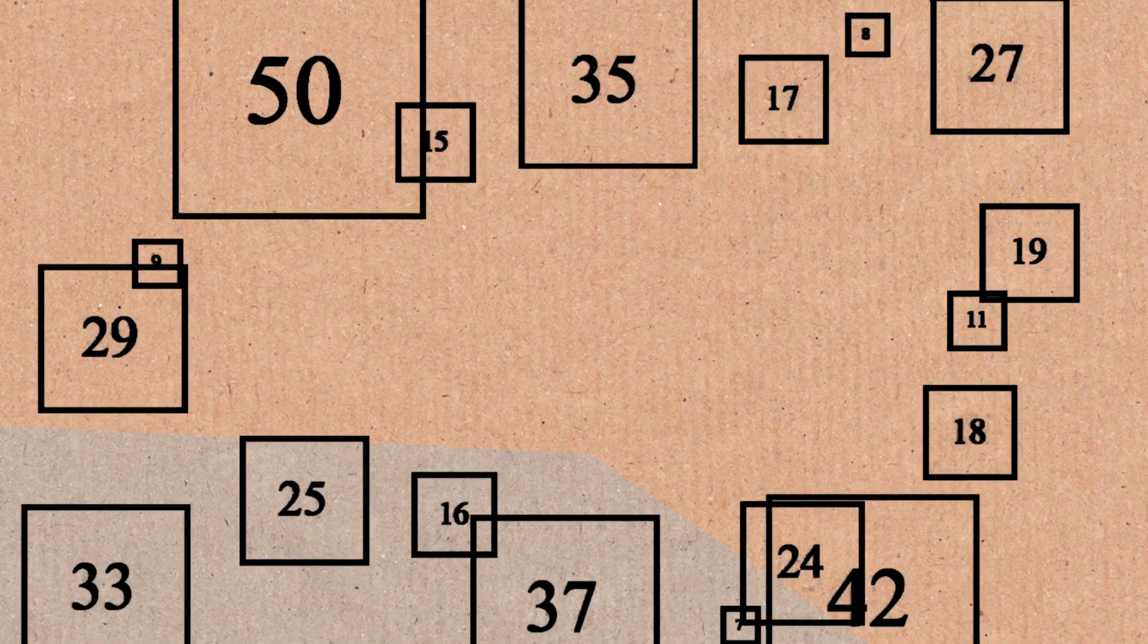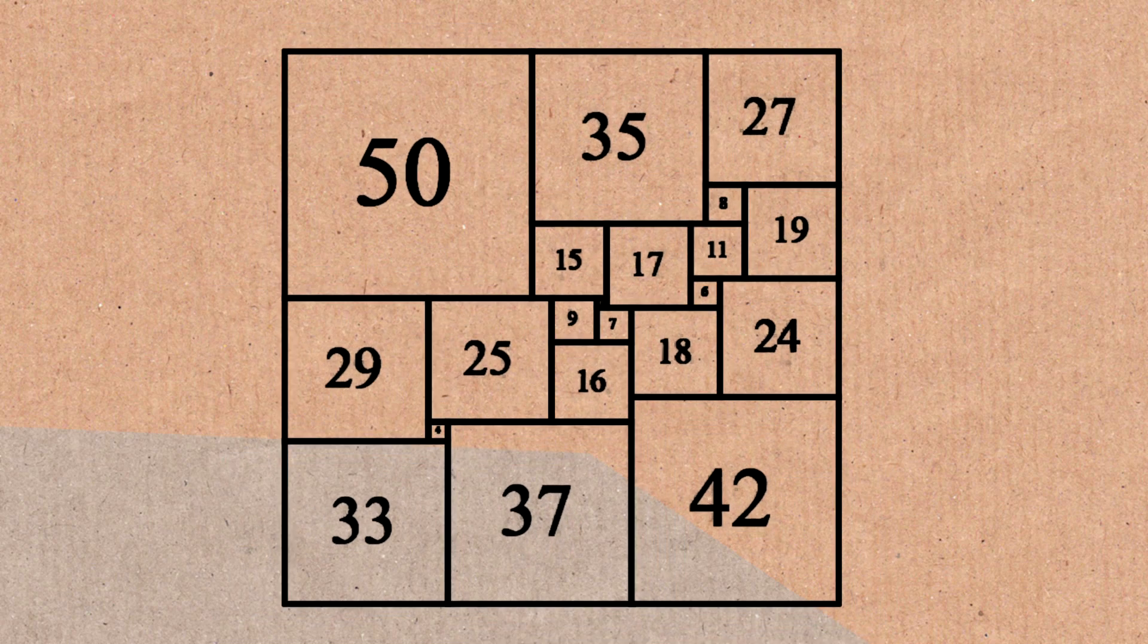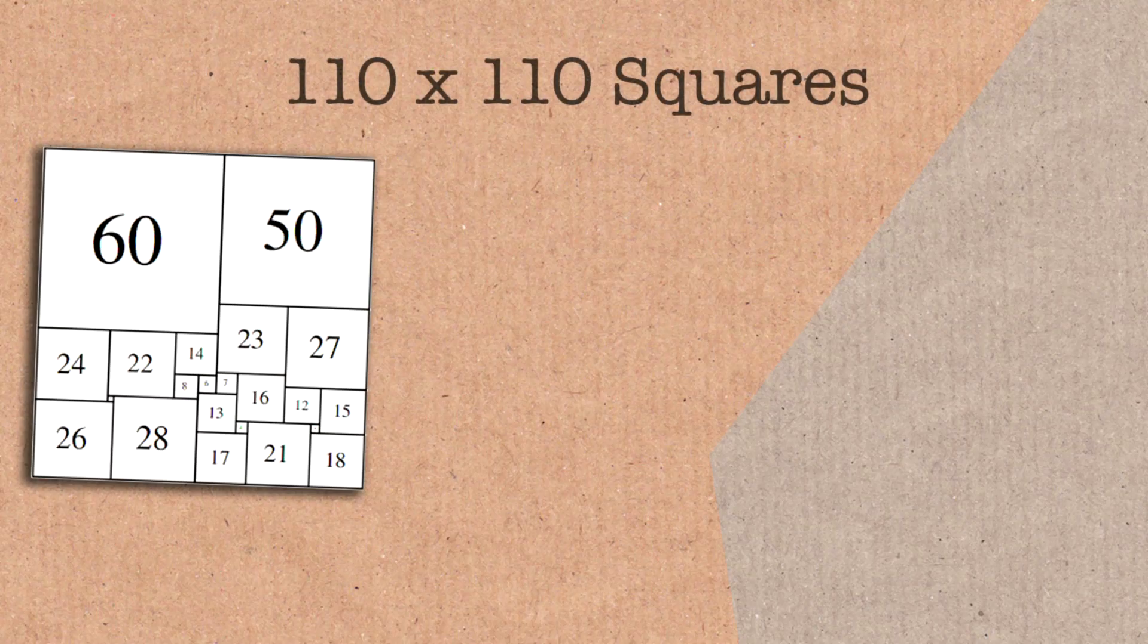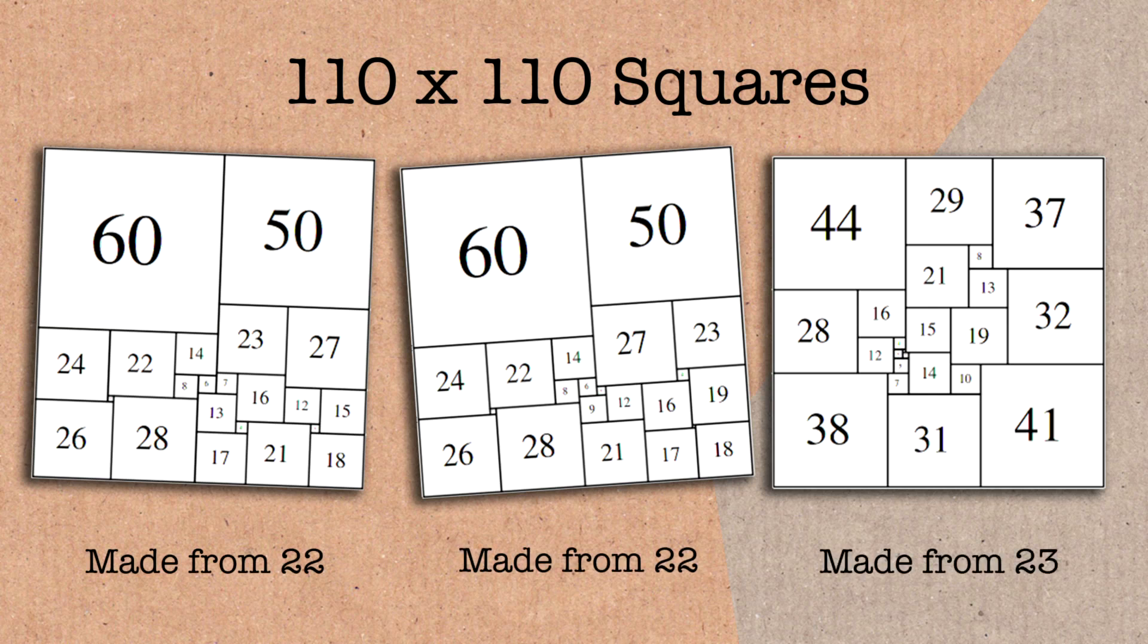Okay, so we've seen this one, which is the smallest squared square. The dimensions of it is 112 units by 112 units. There is actually smaller squares, if we're just talking about dimensions, but they use more squares. And they're not unique, either. There are three known squares that are of that size. So they're smaller dimensions, but they use more squares.